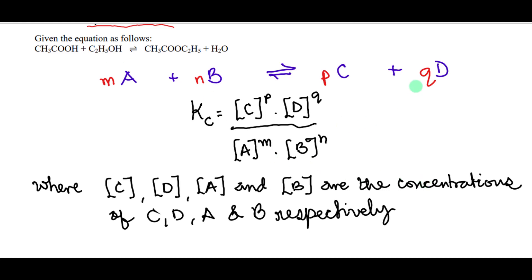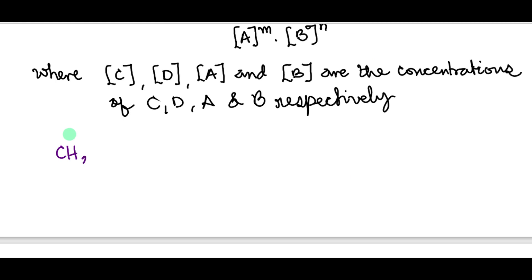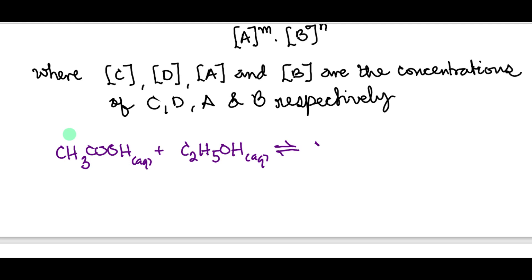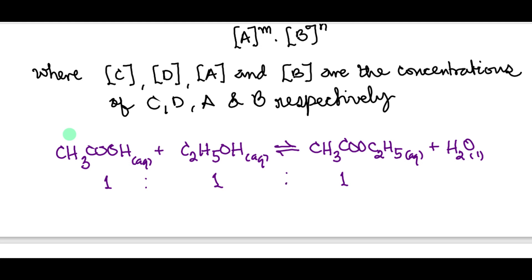Coming back to our equation of reaction: ethanoic acid plus ethanol giving us ethyl ethanoate and water, with the mole ratio 1:1:1:1.